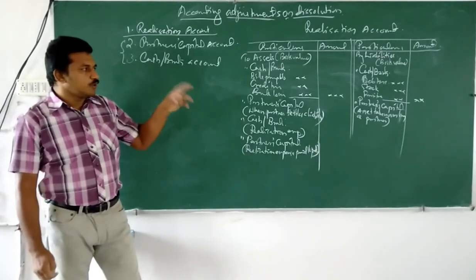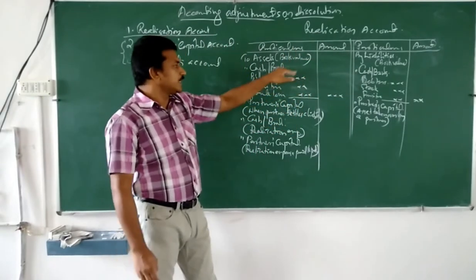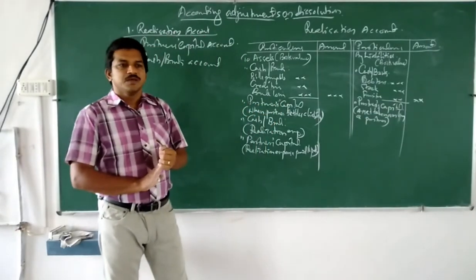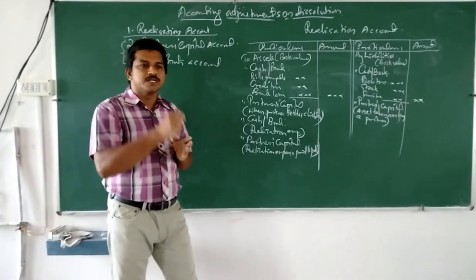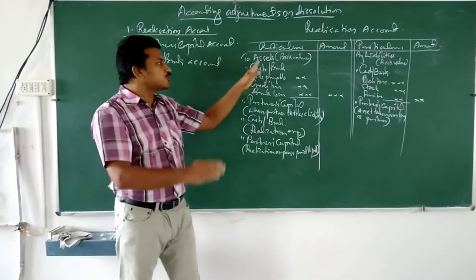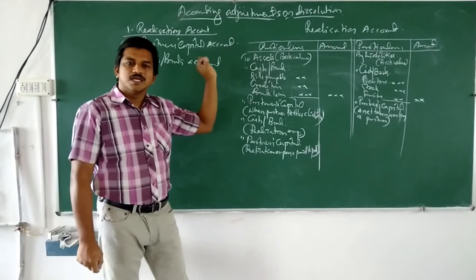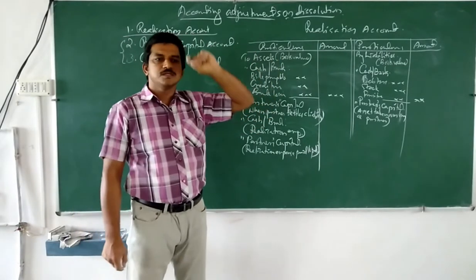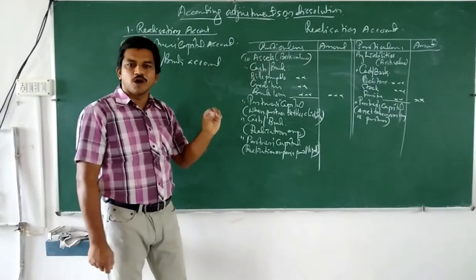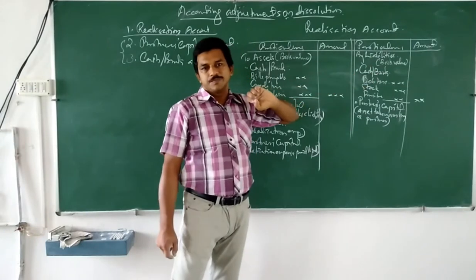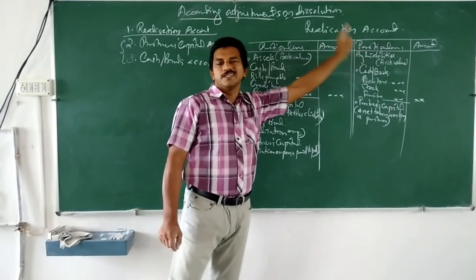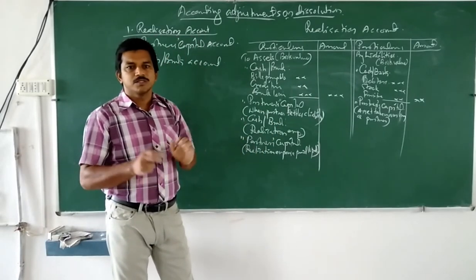One important point: debtors in the balance sheet may be shown as a gross amount in the inner column with a deduction for provision for doubtful debts. In that case, debtors should be transferred to the realization account at their gross value, and the provision for doubtful debts should be transferred to the credit side as a liability.